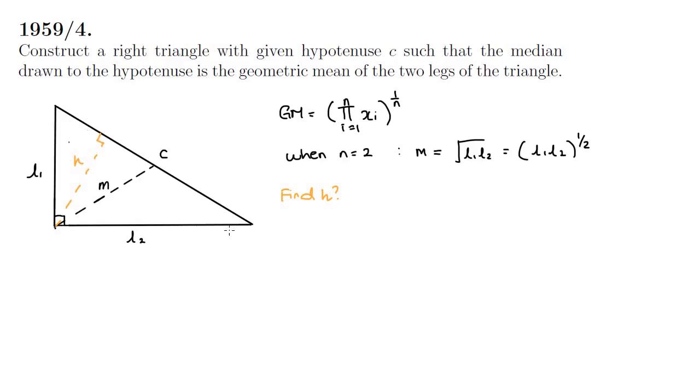We can find h in terms of c by considering the area of the triangle in two different ways. If area is equal to half base times height we can first think of base and height as the two legs of the triangle so half l1 l2.